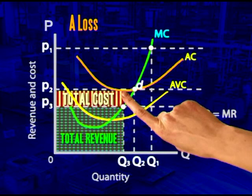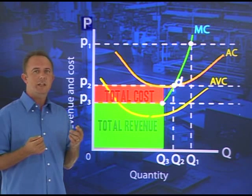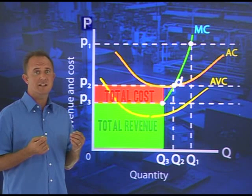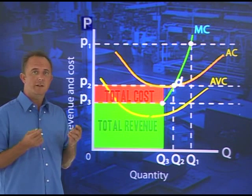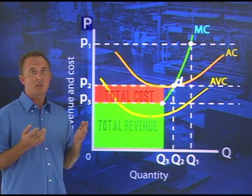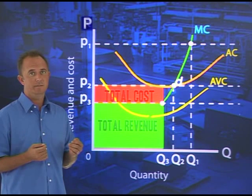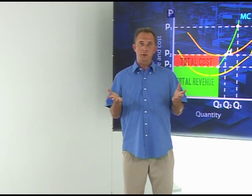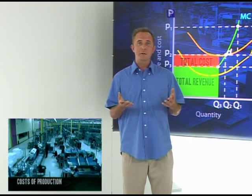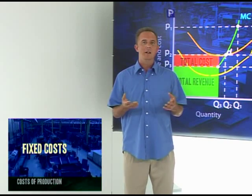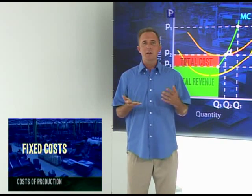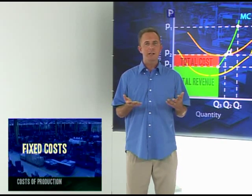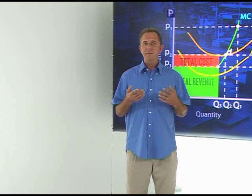Now what does this mean? Will a selling price of P3 force our firm out of business? Well, let's look at what the position will be in the short run. If the firm does shut down immediately, there will be no revenue, but the firm will still have to pay its fixed costs for a while. It will still have to pay rent, interest on loans, rates and so on because it's still contractually obligated to do so.